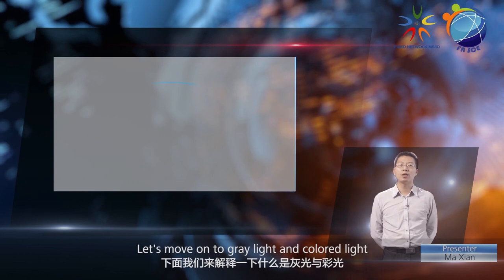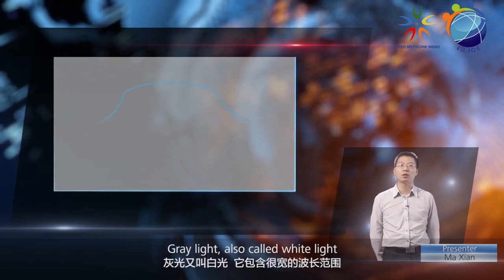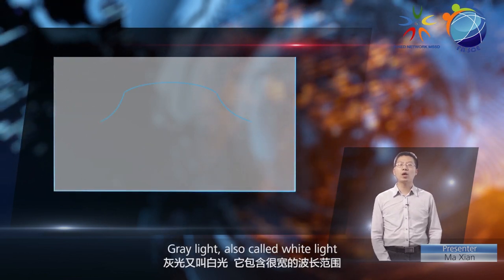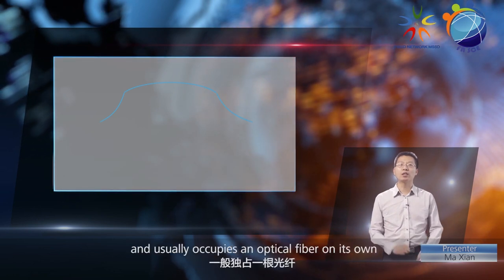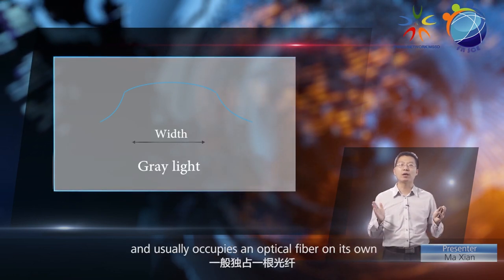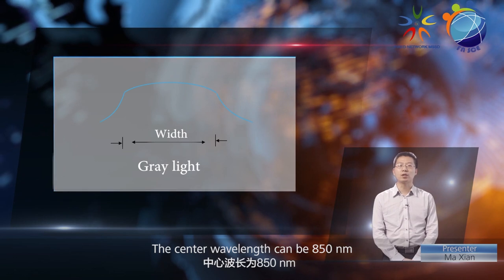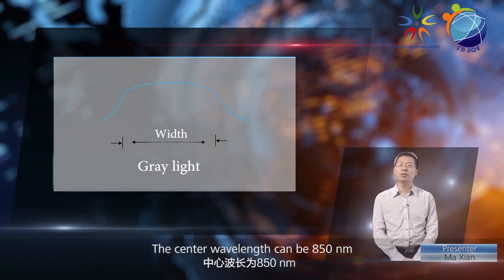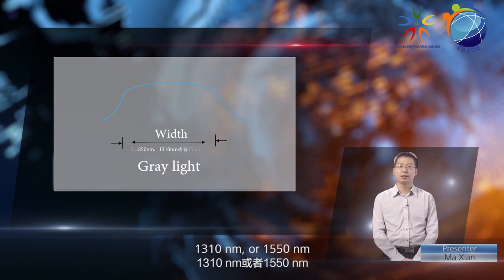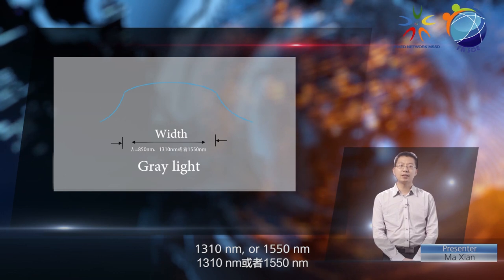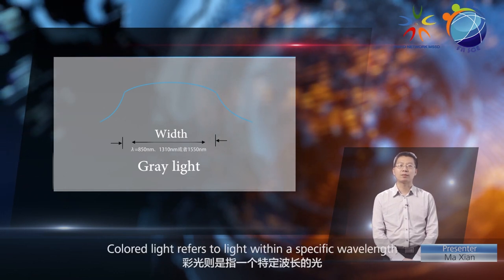Let's move on to gray light and colored light. Gray light, also called white light, has a broad wavelength range and usually occupies an optical fiber on its own. The center wavelength can be 850 nanometers, 1,310 nanometers, or 1,550 nanometers.